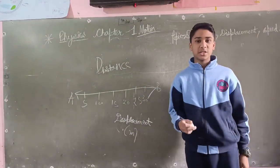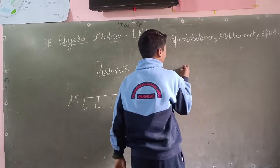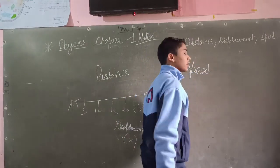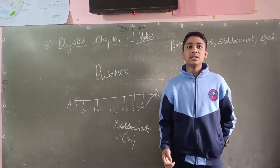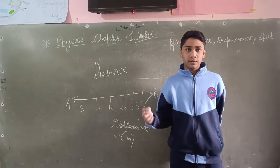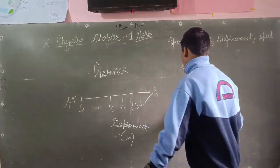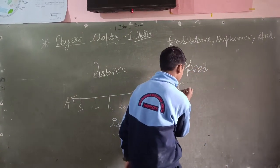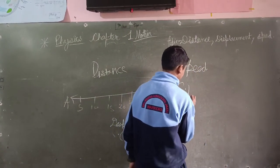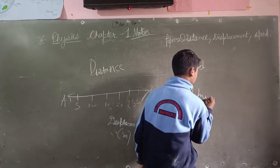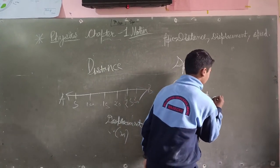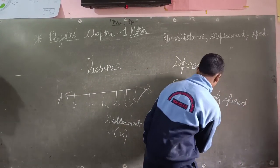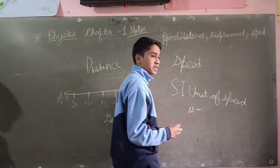Next is speed. Speed is defined as distance traveled per one unit of time. The unit of speed is meter per second.